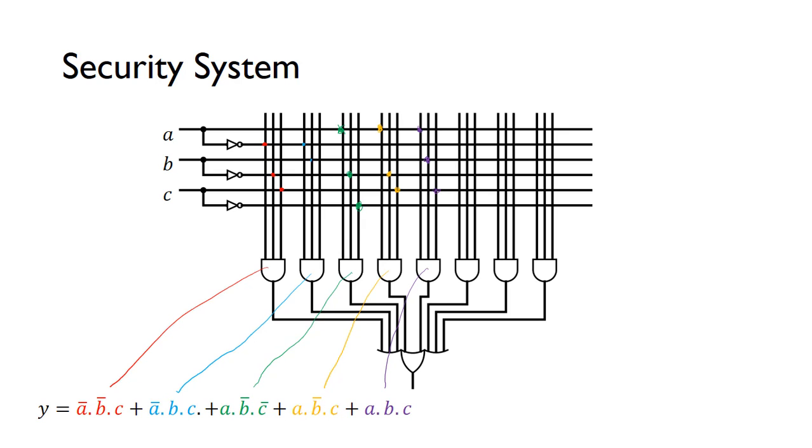We just need to OR them together. For this particular example, we've only got these five minterms so we don't need these last ones. They'll feed into this OR gate. That's how we implement that system very easily using a PAL. You create a truth table, get a SOP expression, and it's very simple to implement using a PAL.